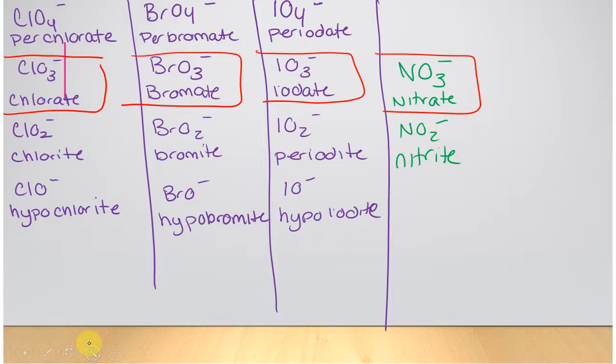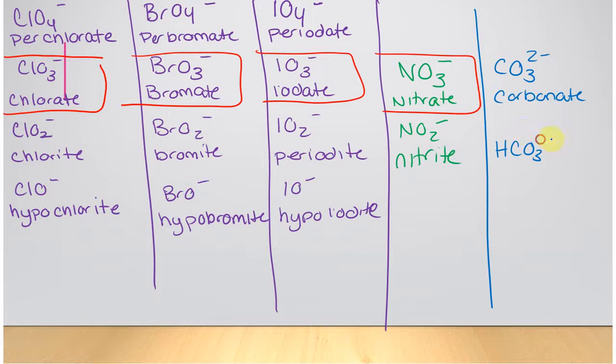Now, then it starts to change a little bit. Carbonate is CO3 with a 2 minus charge. Now, there is no carbonite, but occasionally, especially for those of you that are going into the medical field, you may want to memorize HCO3 with a minus charge. This is called bicarbonate. Sometimes it's also called hydrogen carbonate, which is more correct, but for people that are going into nursing, you'll want to know that. For me, not so much. It bothers me that it's not IUPAC. If you know carbonate, I'm pretty happy with you.